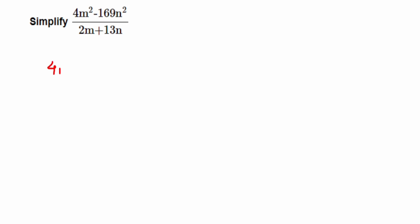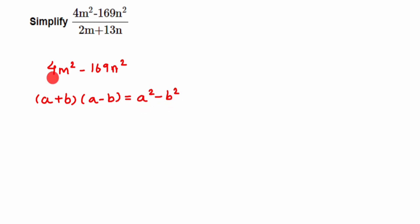In 4m² − 169n², only two terms are present, which means we're using the third identity: (a + b)(a − b) = a² − b². Here, 4m² and 169n² represent a² and b² respectively. So if we find what a and b are, we substitute into the left-hand side of the identity and get the answer.